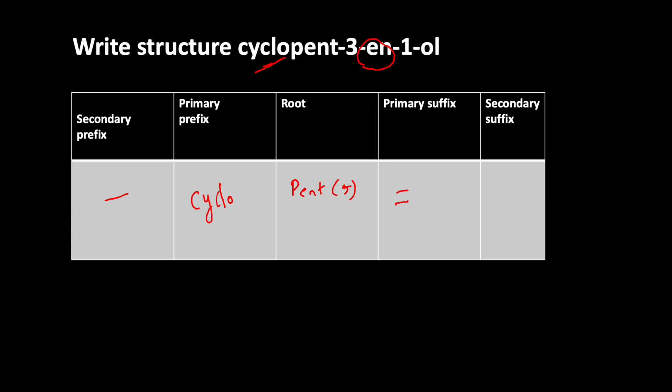Then we have 'ol' in the first position. That is the secondary suffix. 'Ol' stands for alcohol, so there's an OH group in the first position. Now we can draw the structure.